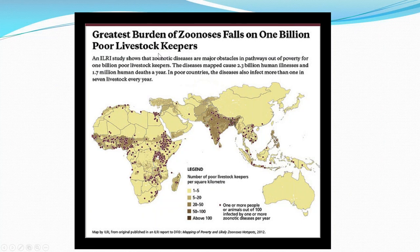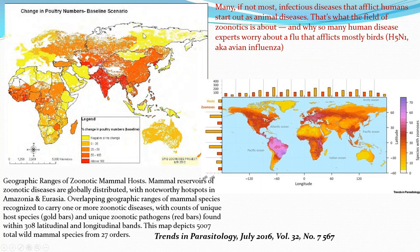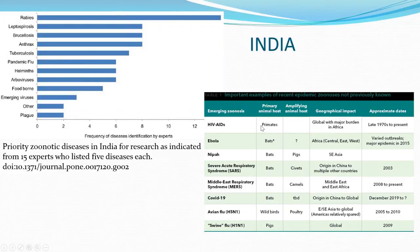The greatest burden of zoonosis falls on one billion poor livestock keepers. There are 2 to 3 billion human illnesses and 1.7 million human deaths per year from zoonoses, apart from making farmers very poor. India is absolutely the darkest area on this map. The red areas on the heat map are dangerous zones for many zoonotic diseases, where mammalian host or reservoir overlaps with humans.